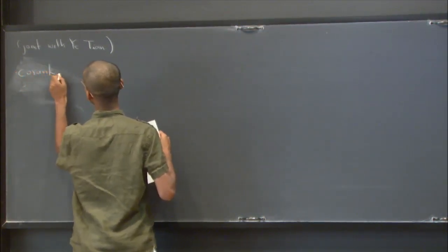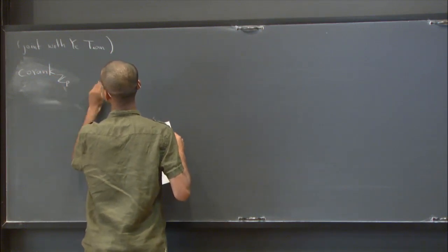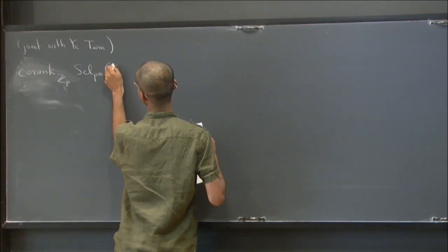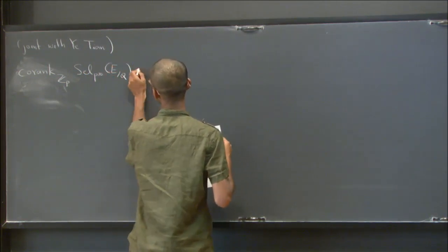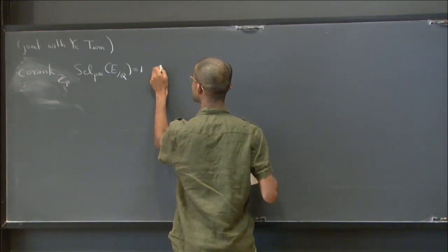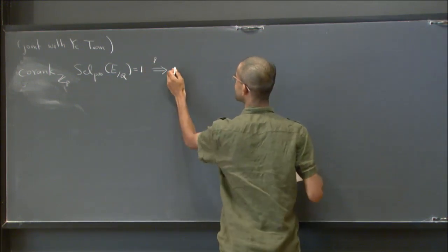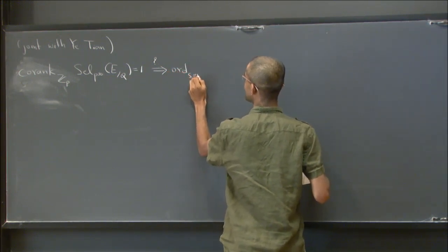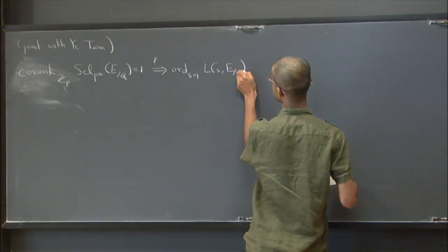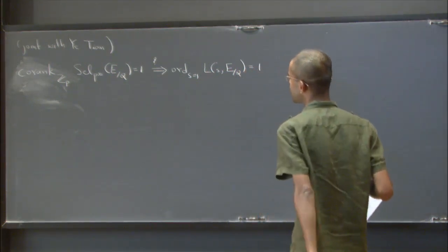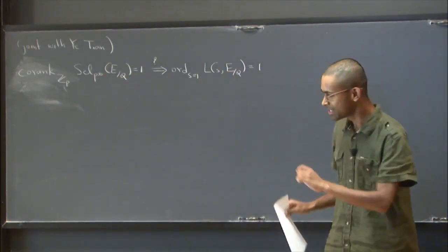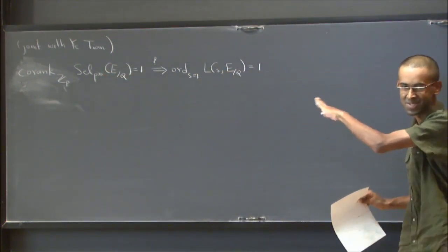Okay, so if ZP corank of Selmer, P Selmer for some elliptic curve over Q has rank 1, then we expect that the analytic rank of corresponding elliptic curve is also 1. Are you going to explain what result? Oh yes, I'll explain very soon. This is just a synopsis.